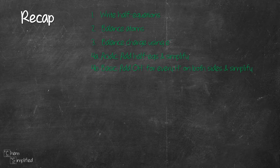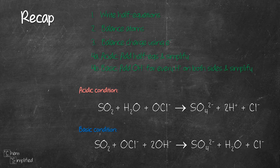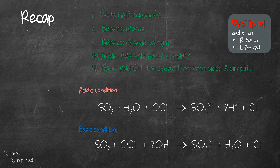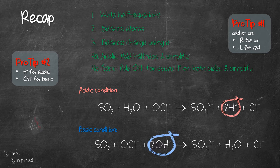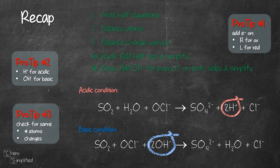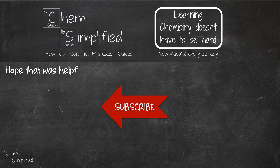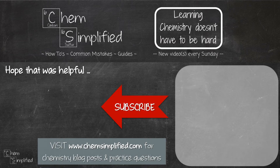To recap, we went through 4 steps to balance the redox equation in acidic and basic conditions. When adding electrons in step 3, add them on the right for oxidation and on the left for reduction. For acidic conditions, H⁺ should appear in the final equation; for basic conditions, OH⁻ should appear and there should be no H⁺ in the final equation. Always double-check your final work to confirm the same number of atoms and charges appear on both sides.